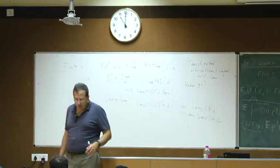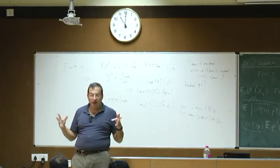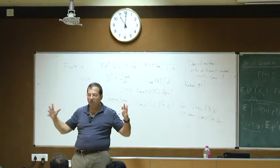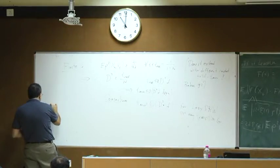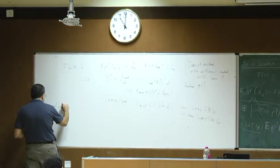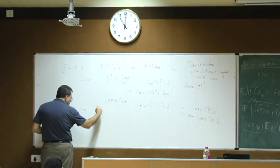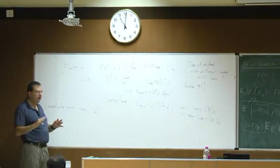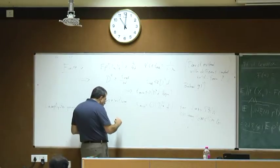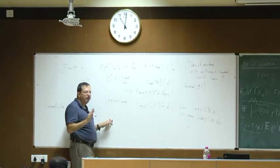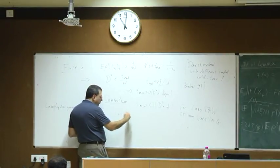This group can be constructed as a wreath product. For us, what is important is not the group as an algebraic object but the Cayley graph. I'm going to focus on describing how the Cayley graph of this group looks. The best way to do it is to first describe what is an element of the Cayley graph. Let me start with the lamplighter group over Z.